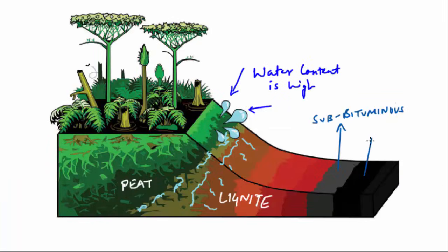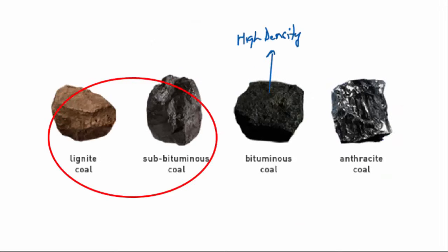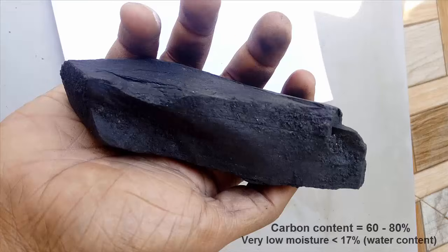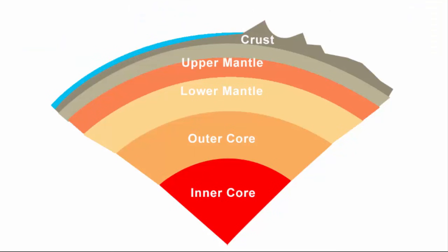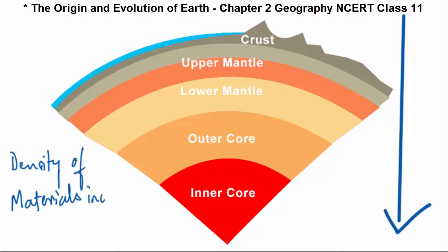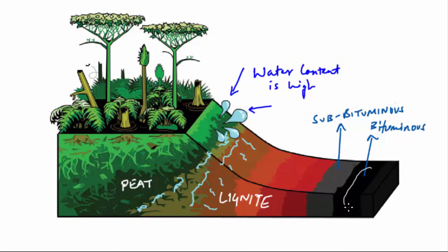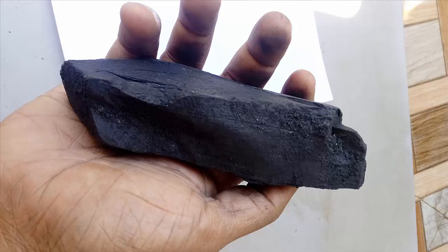Bituminous coal represents the fourth stage in coal formation. It has greater density than lignite or sub-bituminous coals and has 60 to 80 percent carbon content. As we go inside the earth from the crust towards the core, the density of materials increases, and that's how this coal has greater density than lignite or sub-bituminous coal. This type of coal is also the most common coal found.